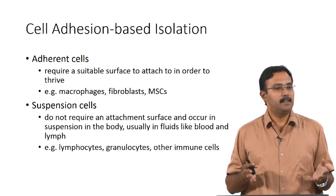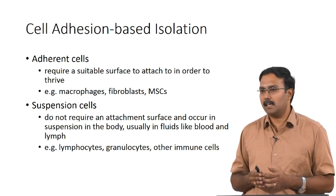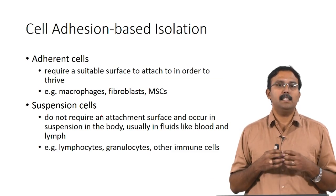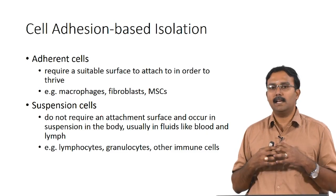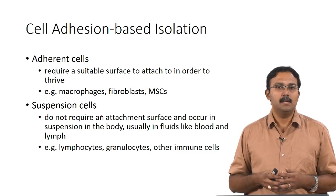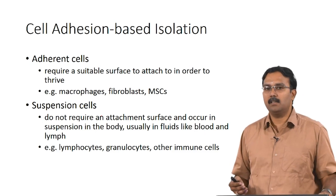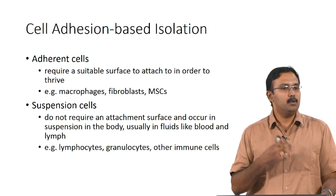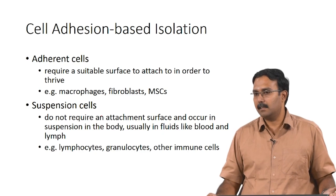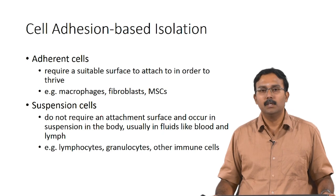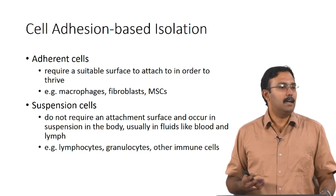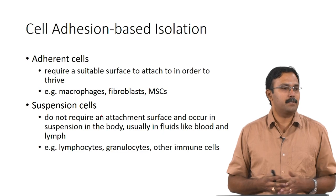The first criteria is adhesion-based isolation. There are two types of cells — adherent cells and suspension cells. Adherent cells require a suitable surface to attach in order to thrive; examples include macrophages, fibroblasts, and mesenchymal stem cells. Suspension cells do not require an attachment surface and are usually found in fluids like blood or lymph — so all blood cells are suspension cells. Lymphocytes, granulocytes, and other immune cells are examples of suspension cells.